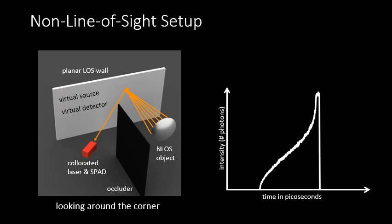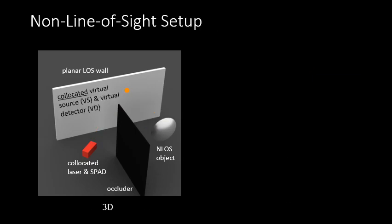We see that both of these cases, looking around the corner and looking through a diffuser, can be equivalently described as an imaging scenario where an object receives light from a virtual source and sends light towards a virtual detector on some surface. For this presentation, we will assume that these two virtual points are collocated.